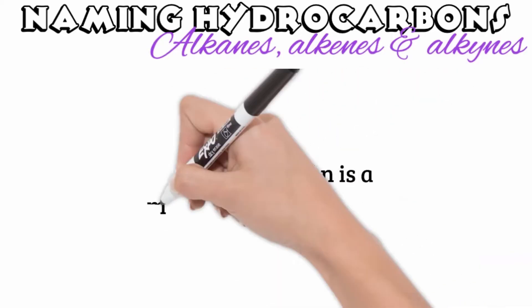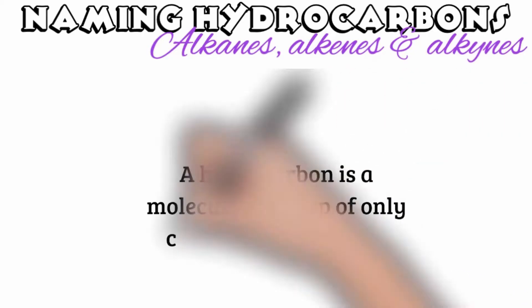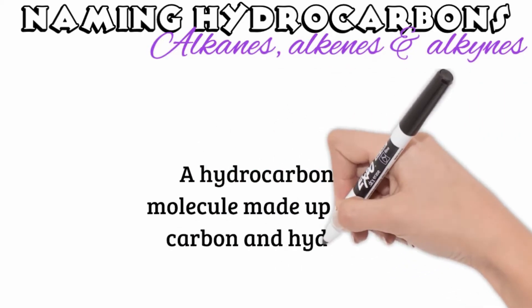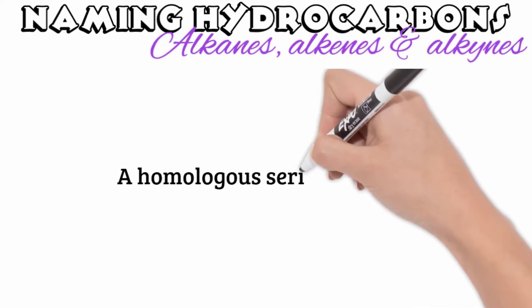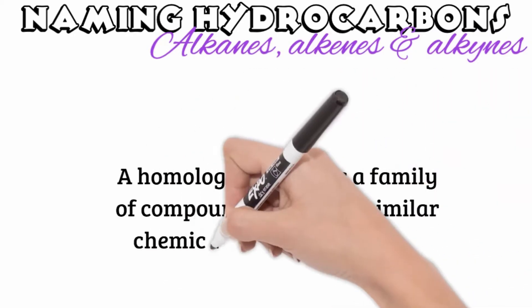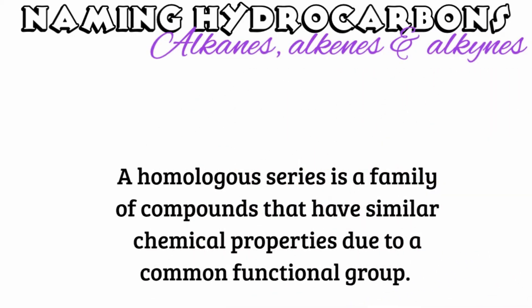A hydrocarbon is a molecule made up of only carbon and hydrogen atoms. Hydrocarbons can form a whole range of different types of structures and therefore have a wide range of properties. A homologous series is a family of compounds that have similar chemical properties due to a common functional group. We're going to look at three groups in particular.